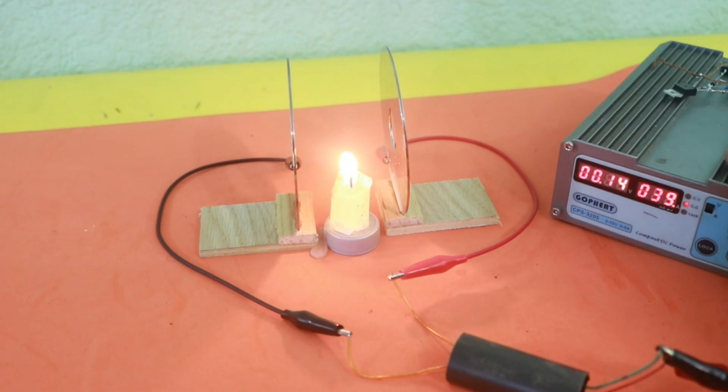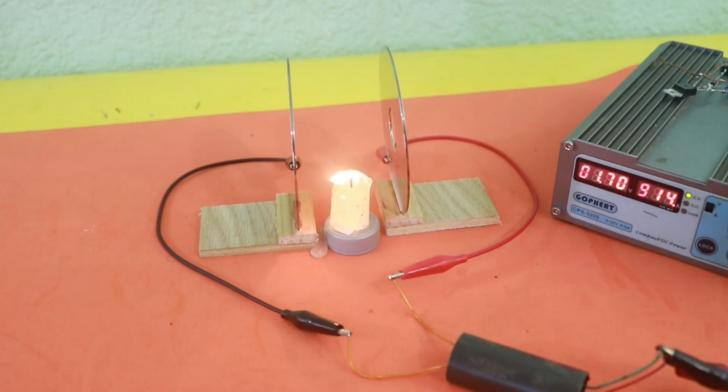There we go. And slowly increase the voltage. And you can see how the flame starts to distort because of the ion wind present between the two plates.